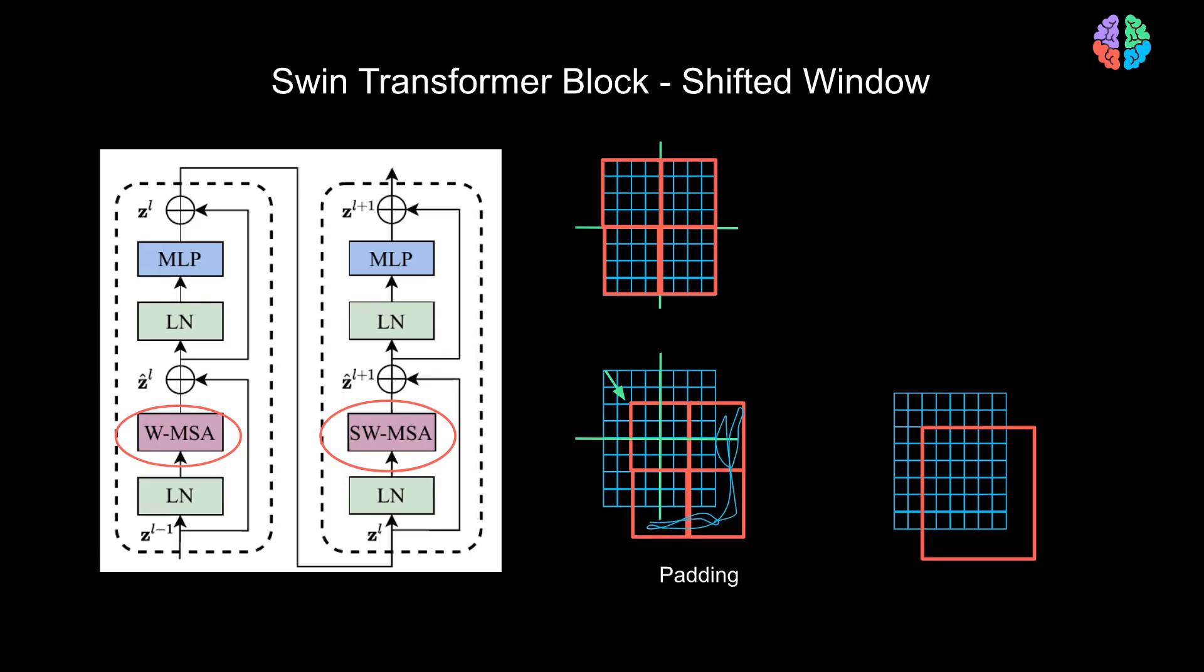A more sophisticated solution, which they call cycle shifting in this paper, is when you copy over the patches on top to the bottom and from left to the right, and also diagonally across to make up for the missing patches.